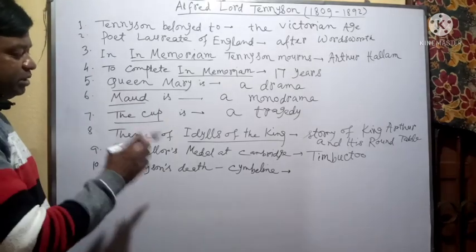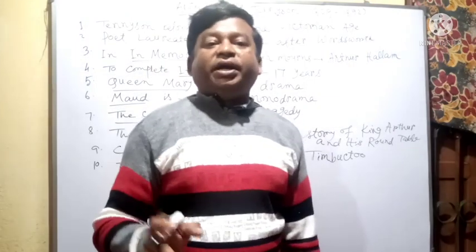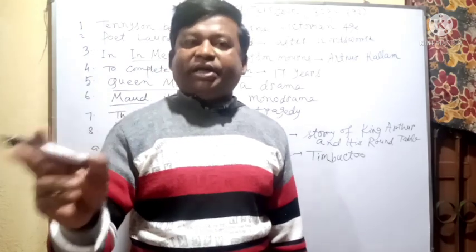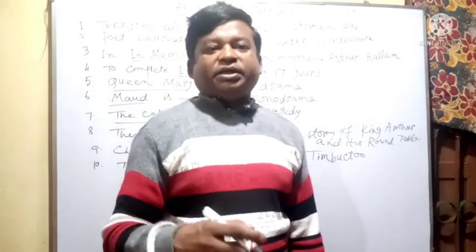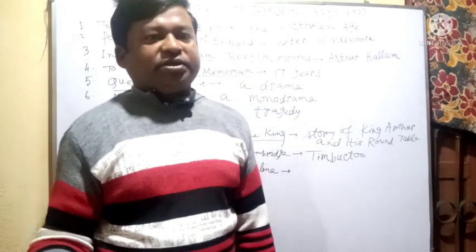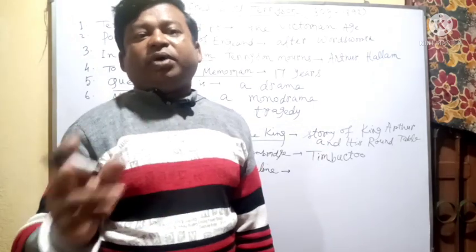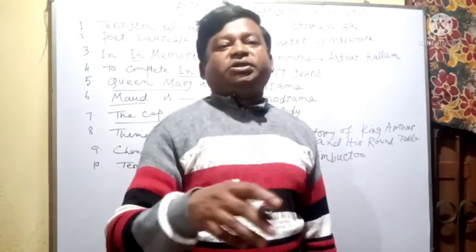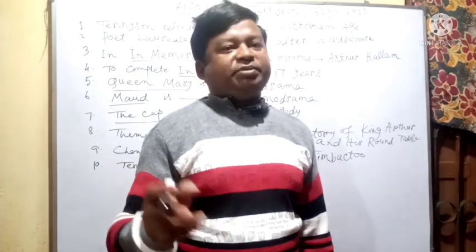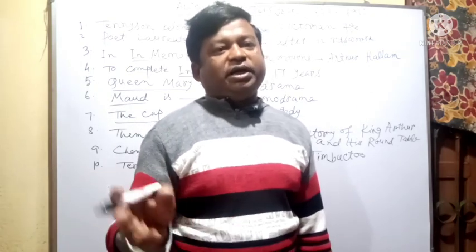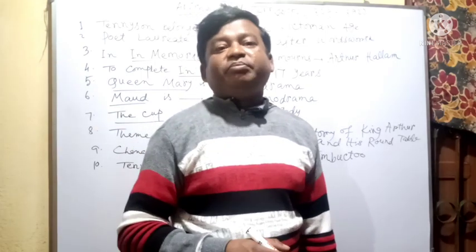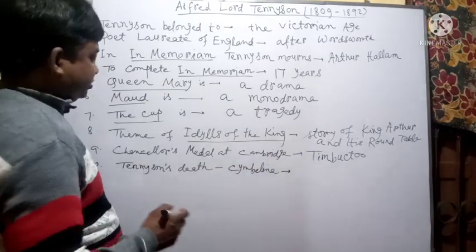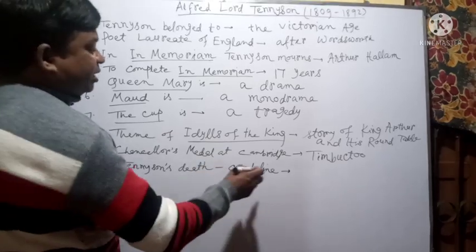Next question, question number 10: When Tennyson died, a copy of a Shakespeare's play was found lying under the cover of his bed — which was that play? The answer is: The play is Cymbeline — Shakespeare's Cymbeline. Tennyson's death and Cymbeline are related.